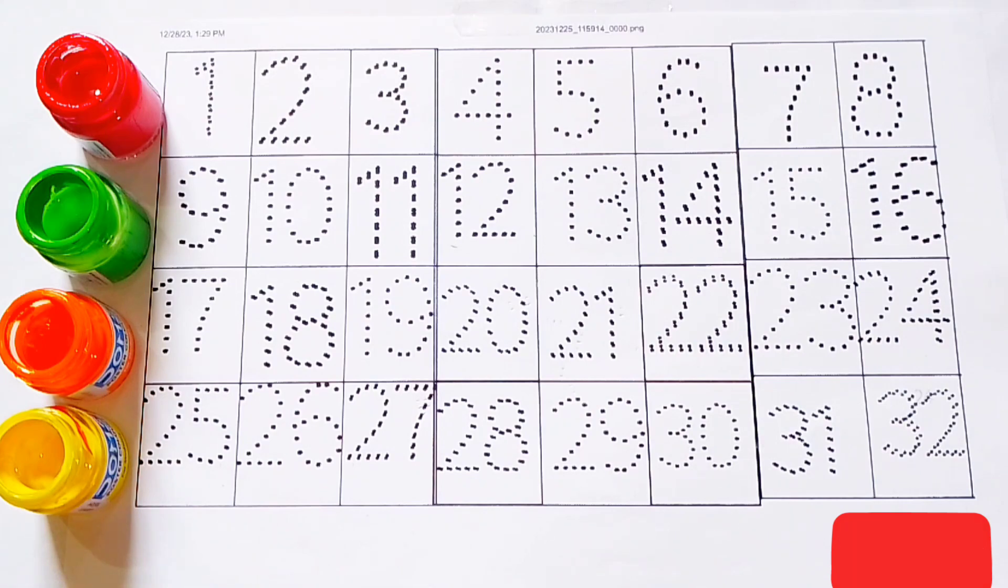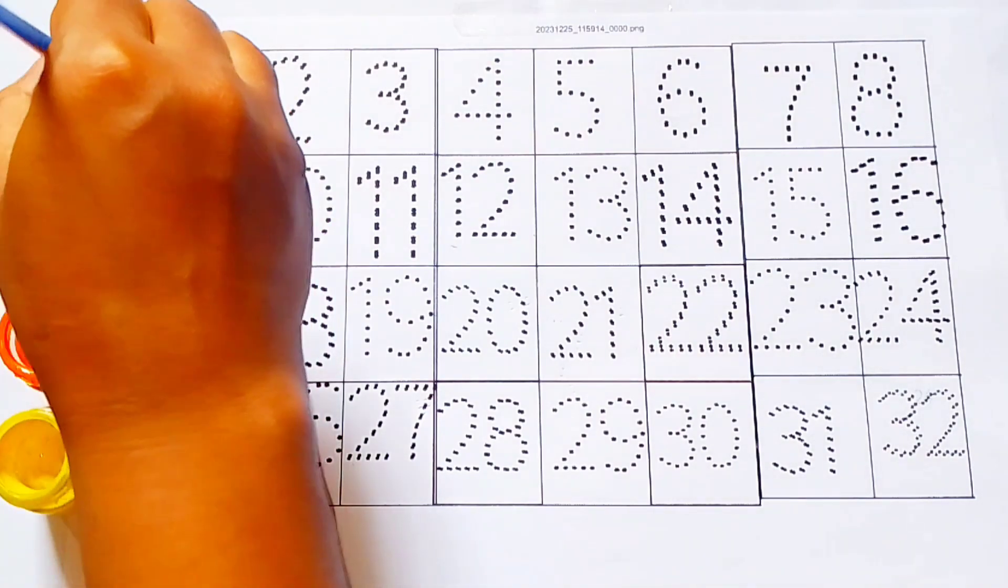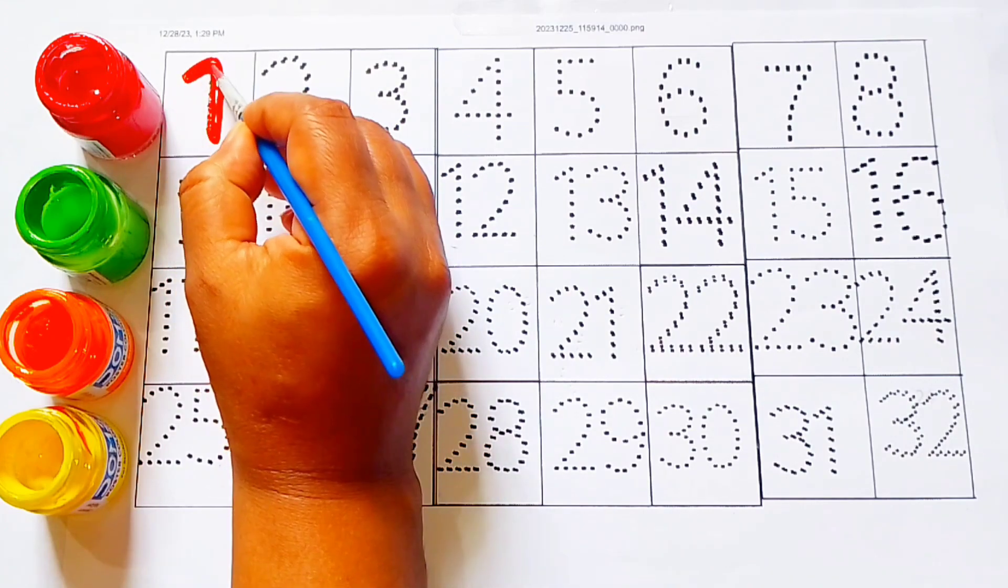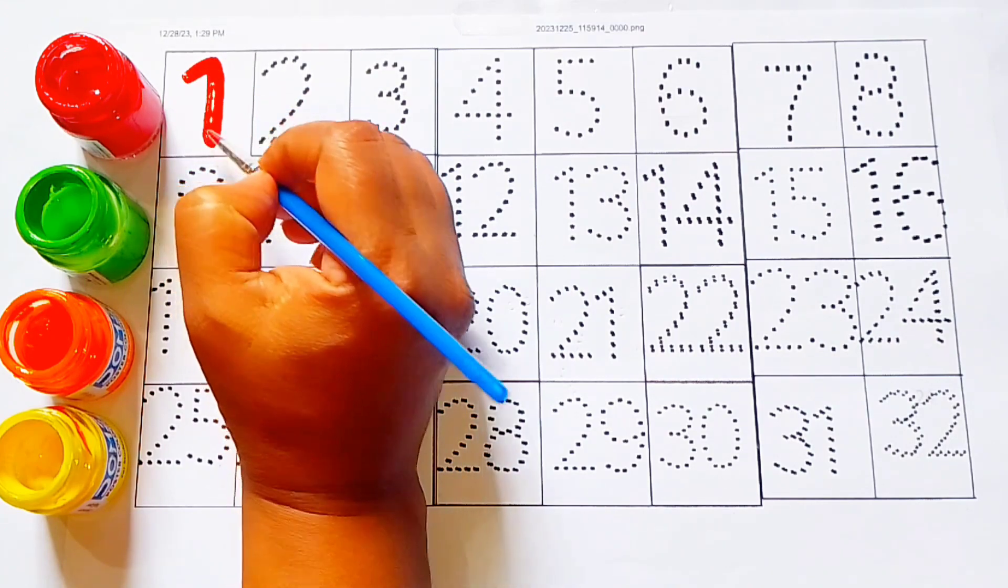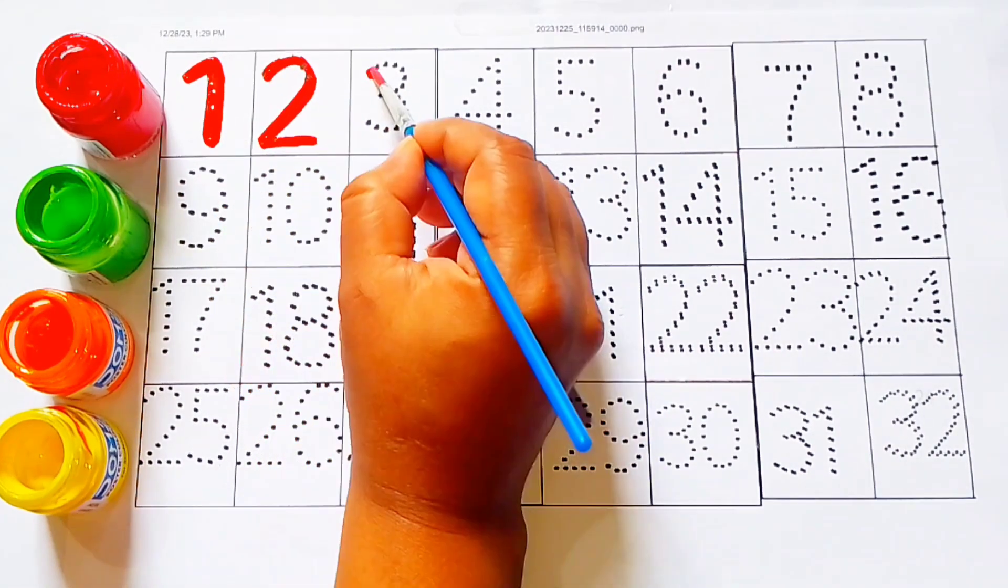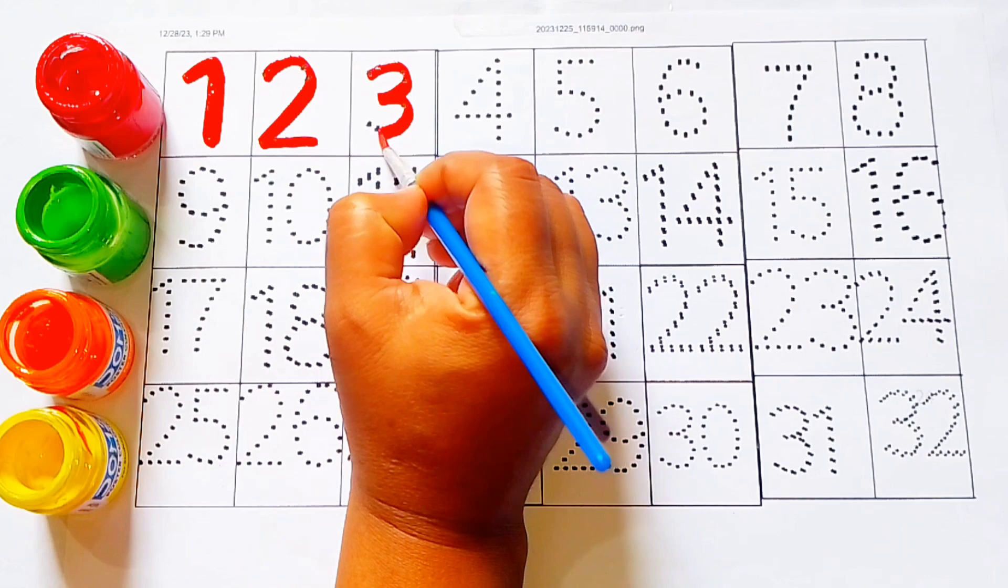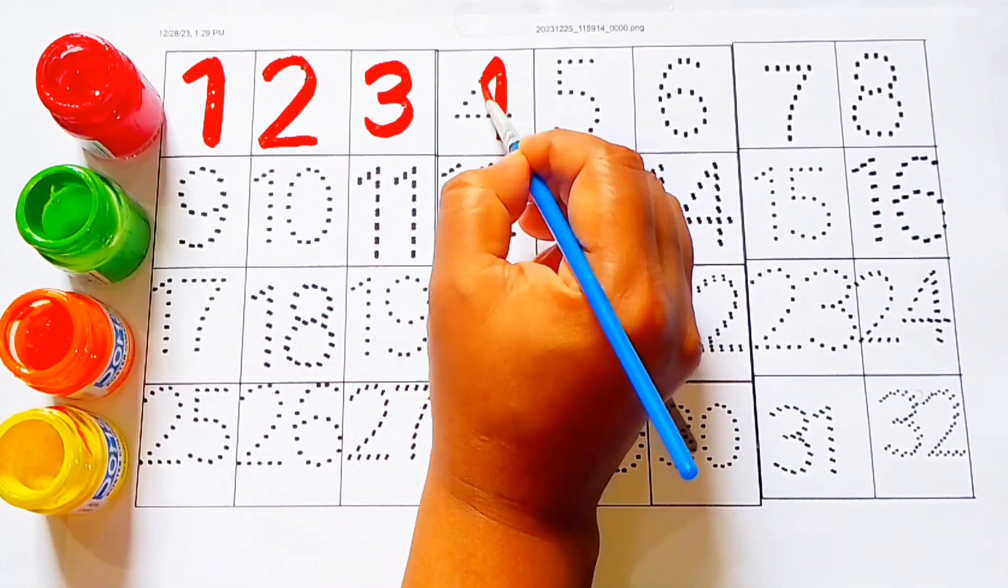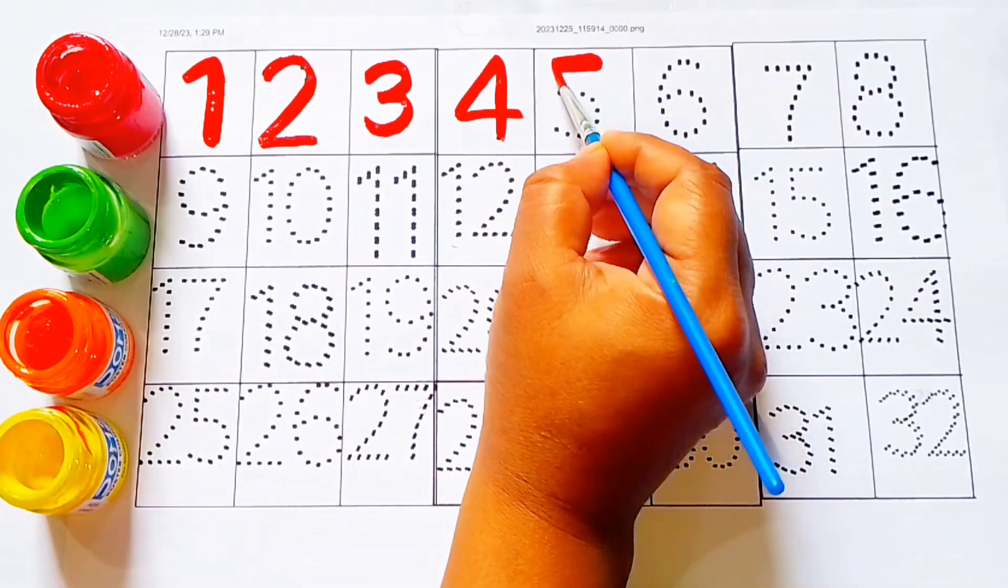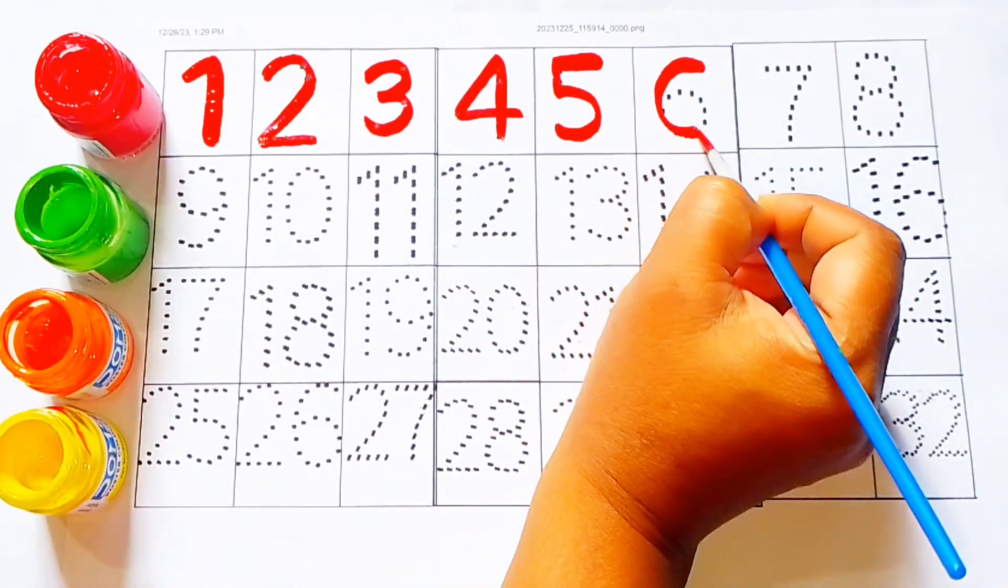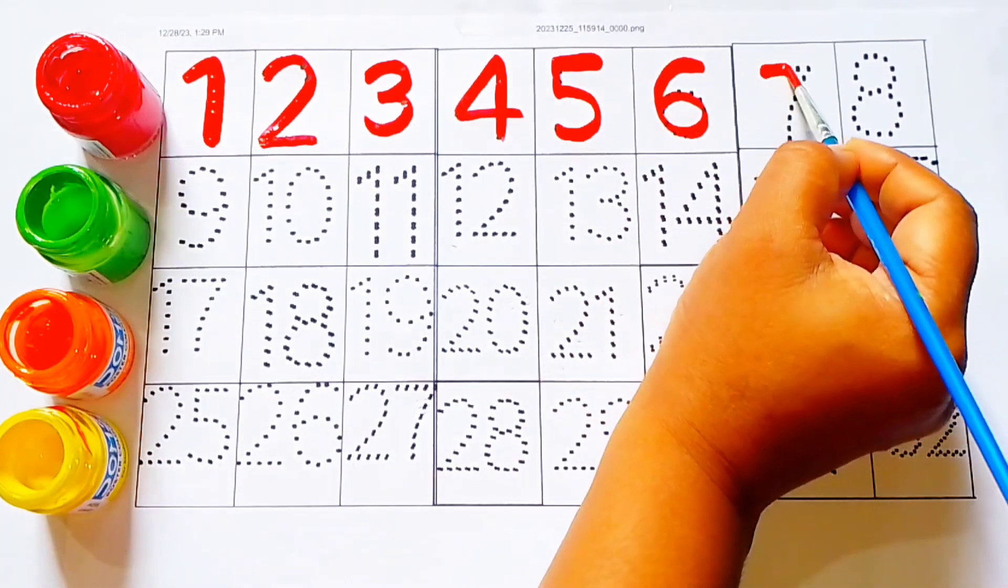Let's color 1, 2, 3, 4, 5, 6, 7 in red color. 1, 2, 3, 4, 5, 6, 7.